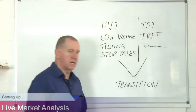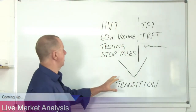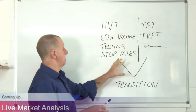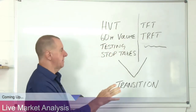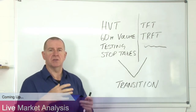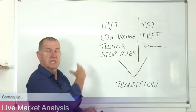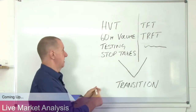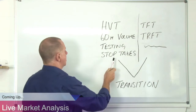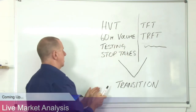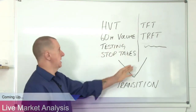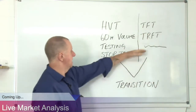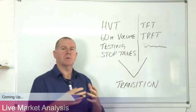Here we are on the whiteboard. If you're not a PAT user there are going to be some things you don't recognize, but that's okay because you can still use the same process I'm explaining here. From a PAT user perspective, we have the high volume turns, the 60-minute volume, we look at testing, stock takes, TFTs, the trade finder tool, the trade range finder tool, and a few other tools that we bring all this information together.